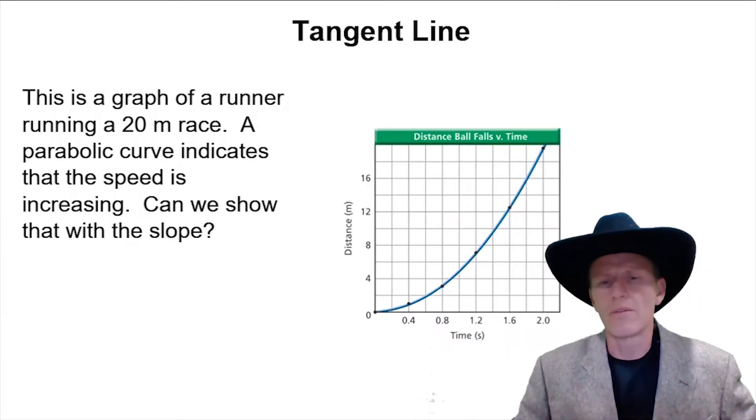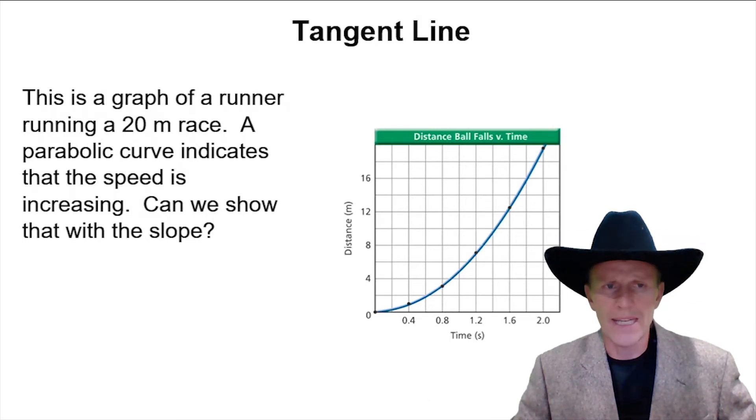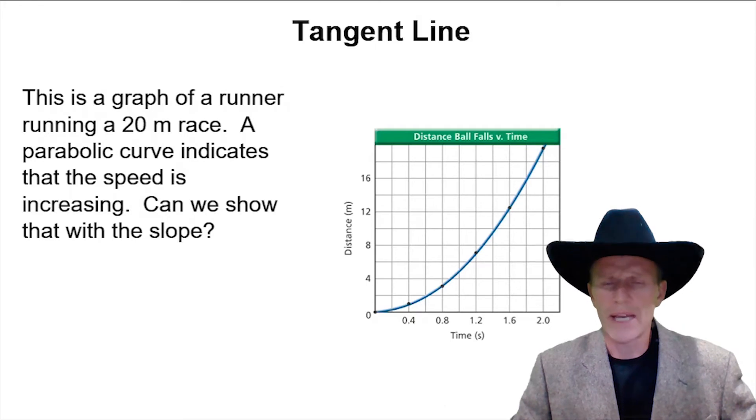This is a graph of a runner running a 20 meter race. A parabolic curve indicates that the speed is increasing. Can we show that with the slope? The slope of a position time graph is the speed.